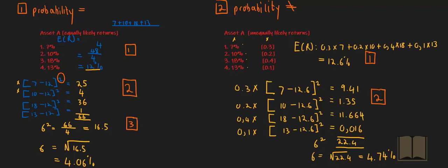The third step involves calculating the variance. In scenario one, the variance is calculated by taking the sum of the squared deviations and dividing it by the number of data points. Whereas in scenario two, we calculate the variance slightly differently — each of the squared deviations is multiplied by the probability of occurrence, and that gives us our variance. Step four simply involves taking the square root of the variance in order to calculate your standard deviation.